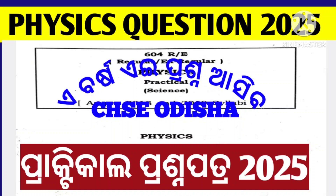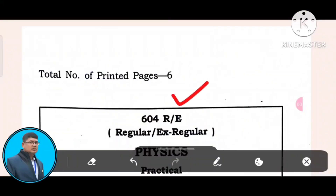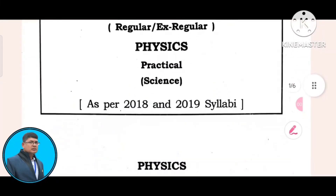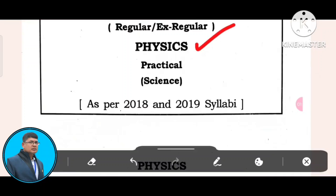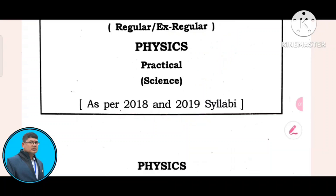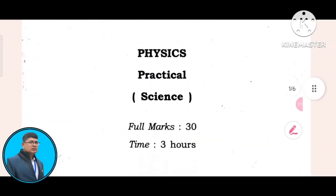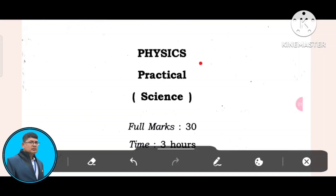So, let's start. Look at this — this is a question. 604 is regular and extra-regular Physics practical science. Physics practical science as per the 2018 syllabus. I will tell you a little bit about the syllabus.